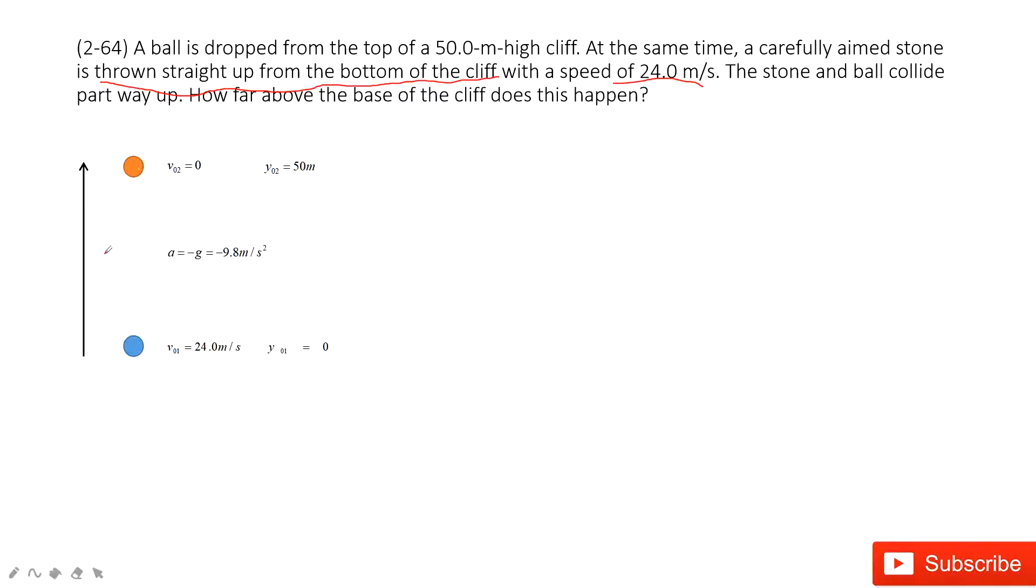For both the free fall body and upward throw motion, the acceleration due to gravity always points down, the magnitude is 9.8 meters per second square. We must take care about this negative sign for the direction of acceleration.